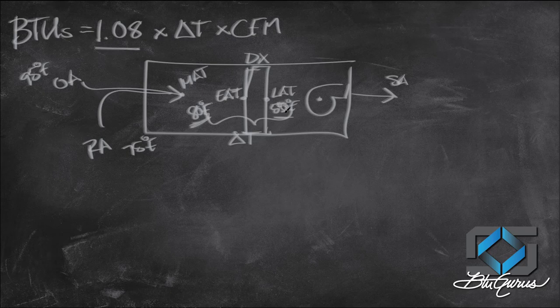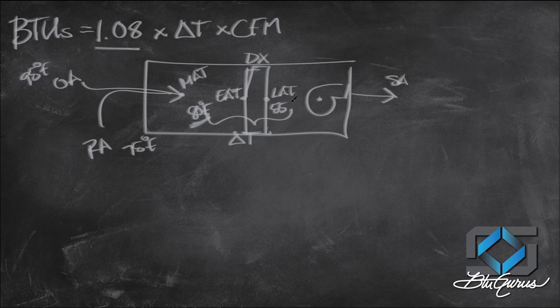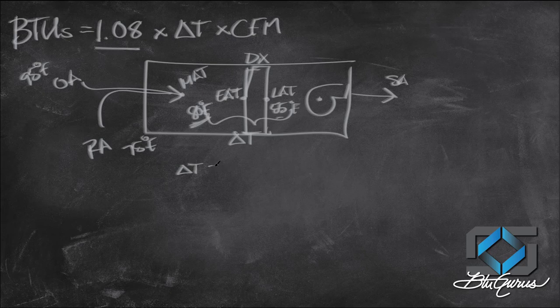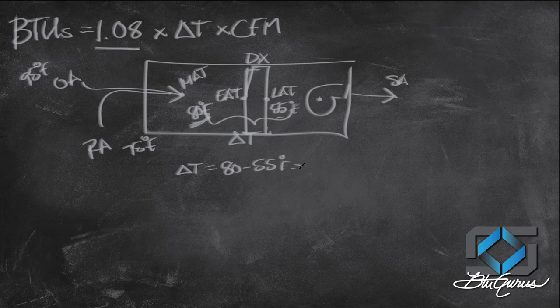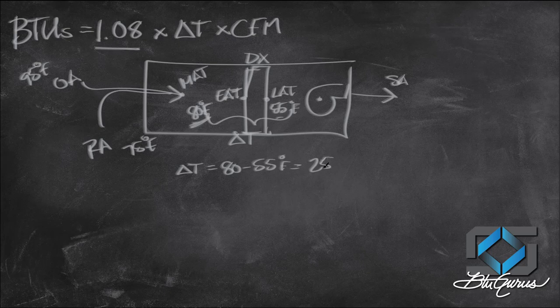My leaving air is 55 degrees Fahrenheit. My delta T in this example ends up being 80 minus 55, so in the equation I'm going to be able to plug in 25 degrees.